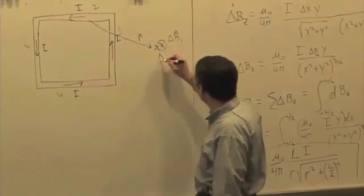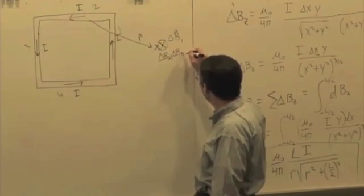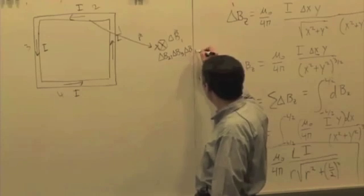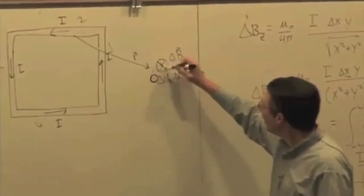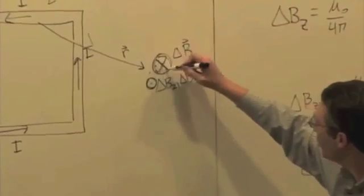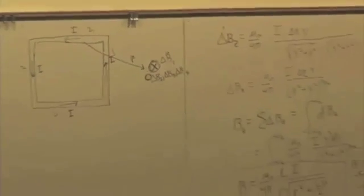And so presumably delta B2, delta B3, and delta B4 are pointing out, but their magnitude is smaller. The magnitude of the field pointing in is much larger.